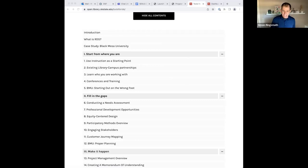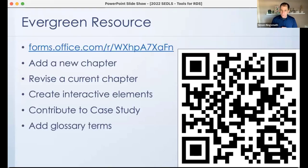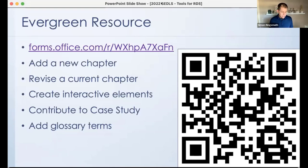I want to explain the collaborative, communal nature of this and what we're looking for. If you're interested in contributing, you can scan the QR code or use the link in the chat. We're basically soliciting or accepting proposals. If anyone would like to add a new chapter, revise a current chapter, create interactive elements, or contribute to the case study — if you want to add a part to the Black Mesa University case study based on your experience, please, we'd welcome that. We want the data librarian community to add your experience to this resource so that it can benefit all of us.